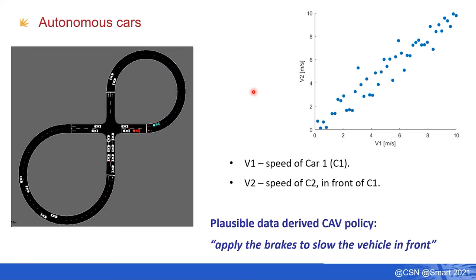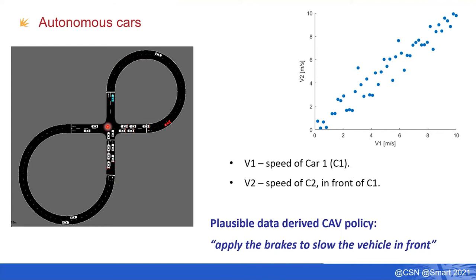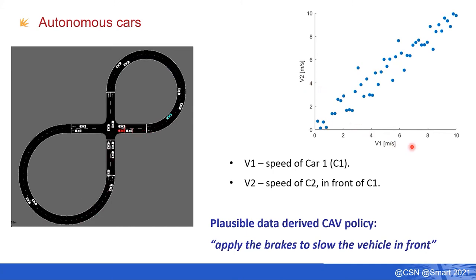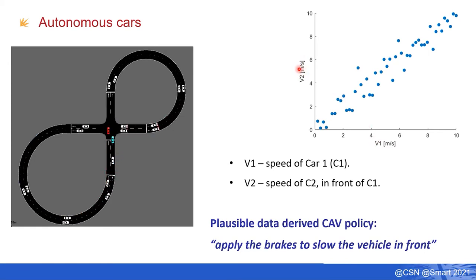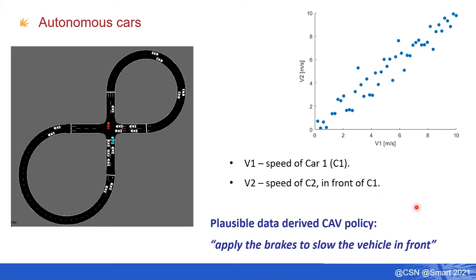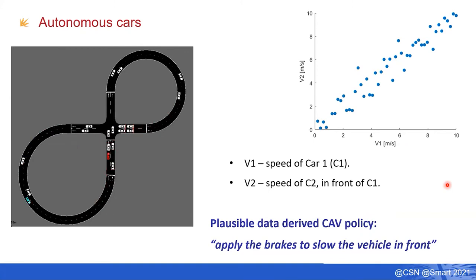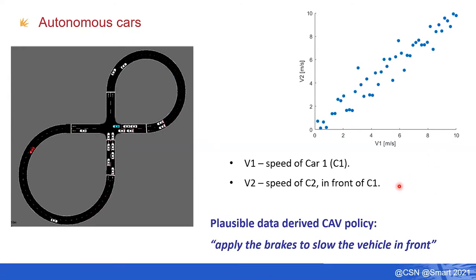Example two is from transportation. In a traffic flow, I study speeds of consecutive vehicles and plot them: the speed of our vehicle versus the vehicle immediately in front. There is a very high correlation, and a data-derived policy would suggest that to stop the vehicle in front, all you have to do is slam on your brakes. That's in fact what any machine learning algorithm would derive from that data.